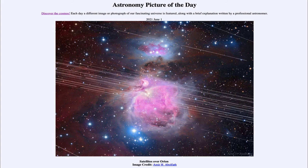Today's picture for June 1st, 2021 is titled Satellites Over Orion. So what do we see here?